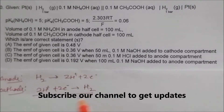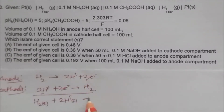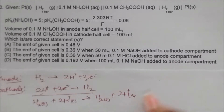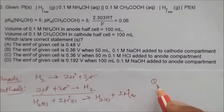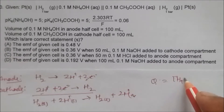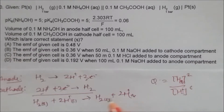Adding the two half-reactions, the overall cell reaction gives H₂ at the cathode and two H⁺ from the anode, with electrons cancelling out. The reaction quotient Q equals [H⁺ anode]² divided by [H⁺ cathode]², since the hydrogen gas pressure is one bar and does not appear in Q.